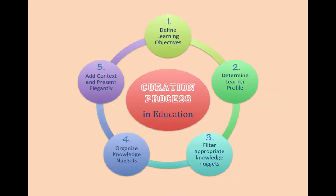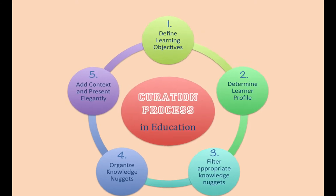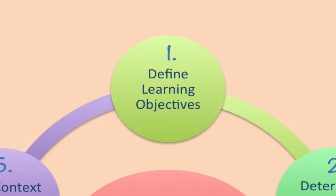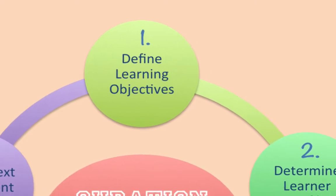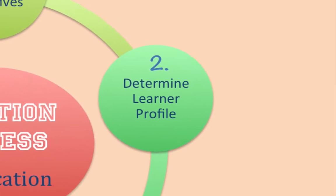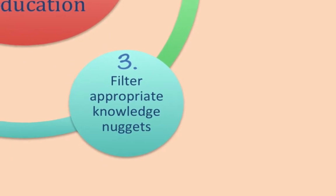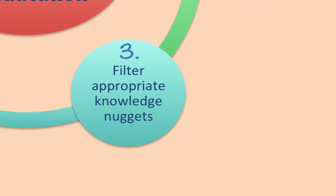The content curation process in education involves five steps. We begin by defining the learning objectives we wish to achieve as learner facilitators. Step two involves determining the learner profile. We then filter or find appropriate learning resources.